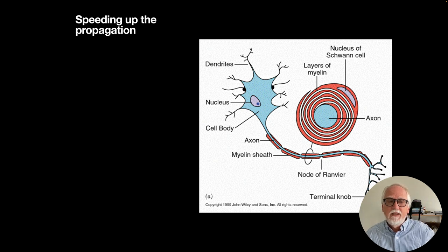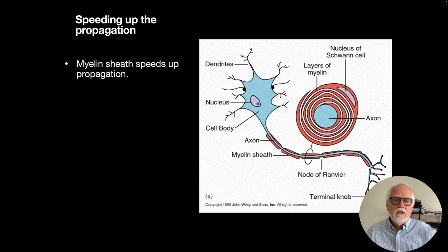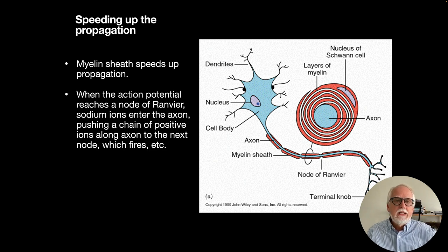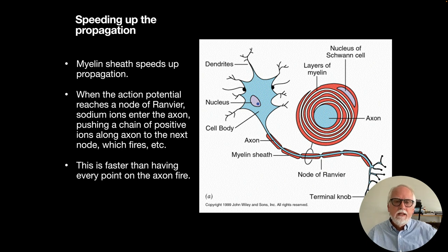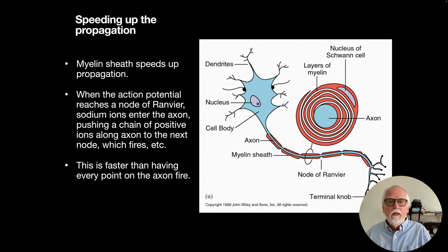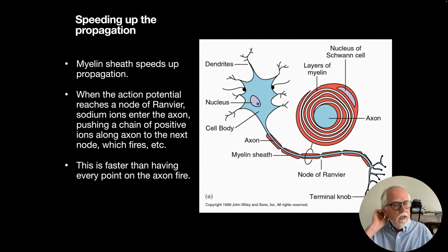Propagation can actually be sped up by the myelin sheath along the axon. When the action potential reaches what's called a node of Ranvier, sodium ions enter the axon, pushing a chain of positive ions along to the next node, which fires, and so on. This myelin sheath makes the signal travel much faster than if every single point along the axon had to fire individually — basically a way to move the action potential along a potentially long axon much more quickly.